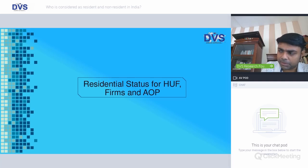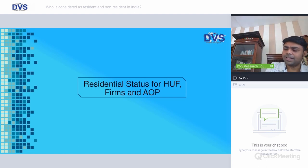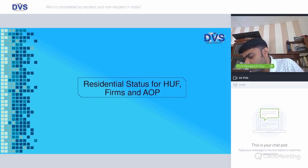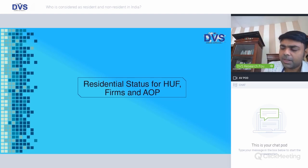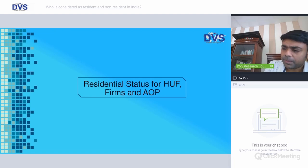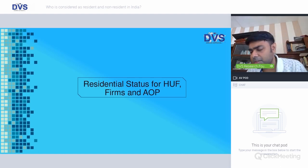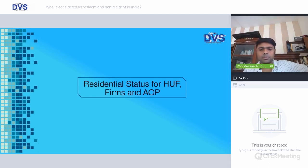The government's intent appears to be catching foreign income from businesses controlled from India that was previously exempt. However, if a business is already controlled from India, it would already be deemed a resident entity — so it wouldn't make a significant difference. The concern is for Ordinarily Resident individuals, whose global income gets taxed, whereas for Not Ordinarily Resident individuals, only Indian income or business income from outside India that is controlled from India gets taxed.